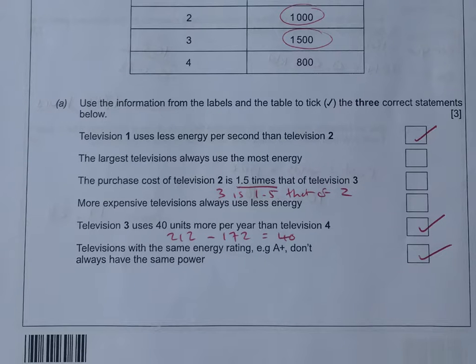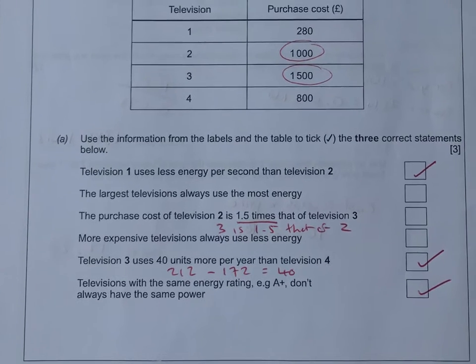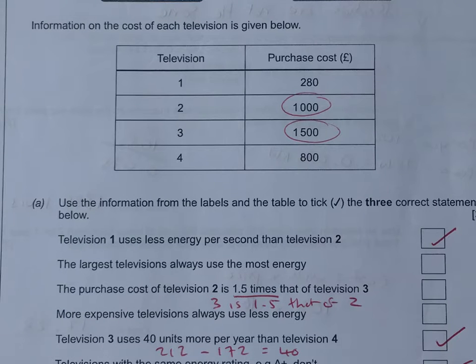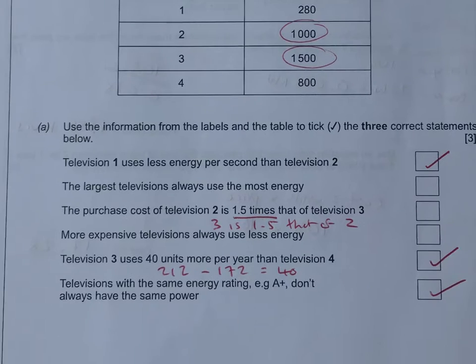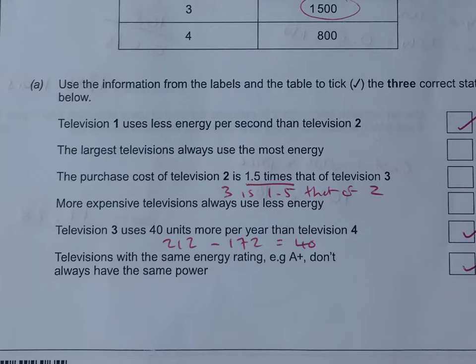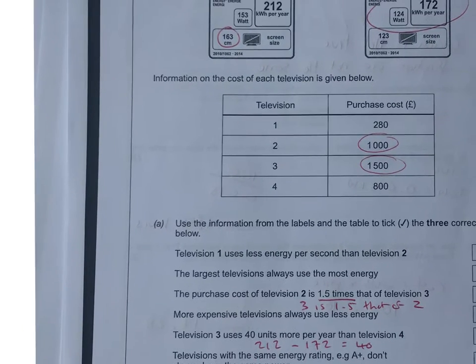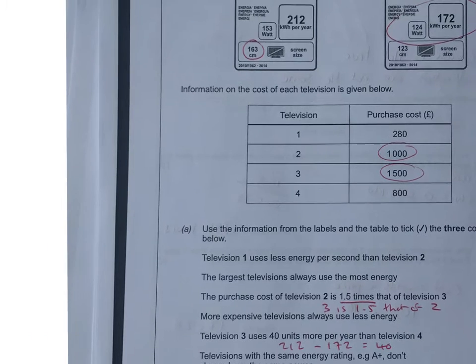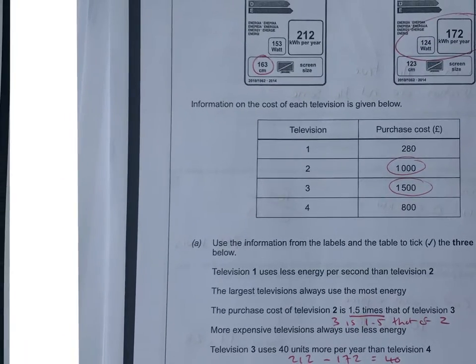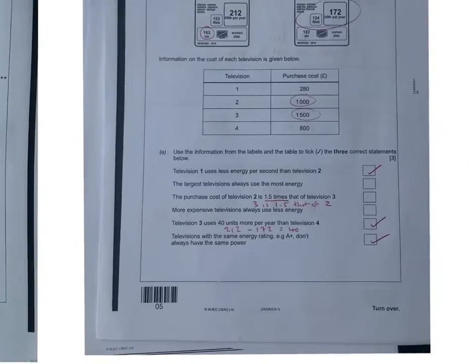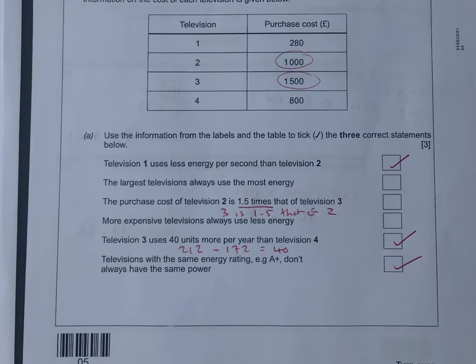I think this is the crucial one because it uses 172 there, and then when we compare that to 139 centimeters, it's less energy, so the statement's false. The purchase cost of television two is 1.5 times television three. It's actually the other way where TV three is 1.5 times that of two.